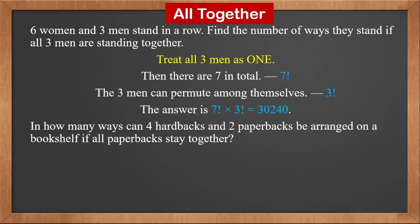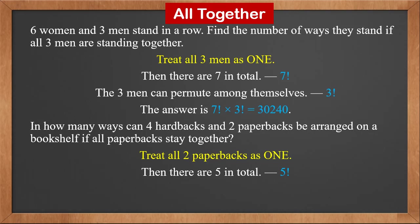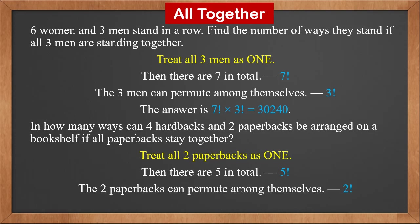In how many ways can four hardbacks and two paperbacks be arranged on a bookshelf if all paperbacks stay together? Treat the two paperbacks as one unit — then there are five items in total, giving 5!. The two paperbacks can permute among themselves: that is 2!. So the answer is 5! × 2! = 240.